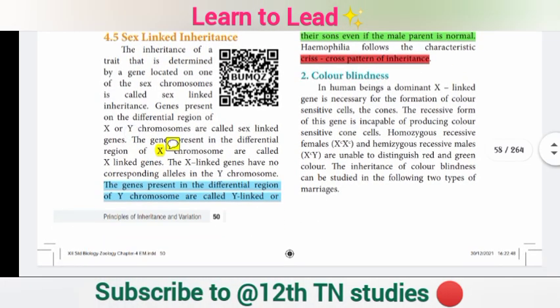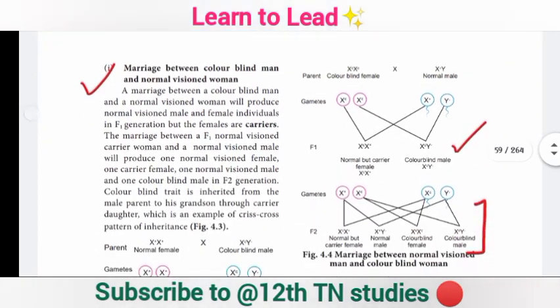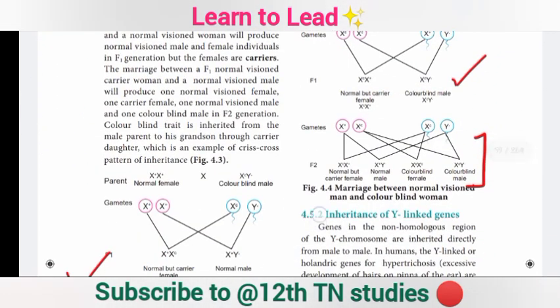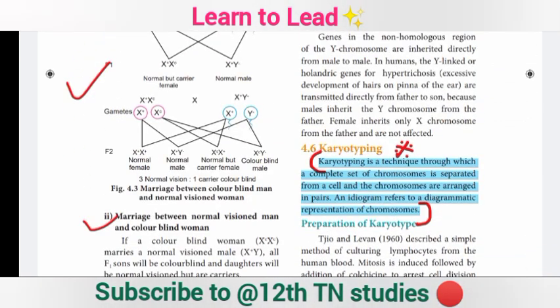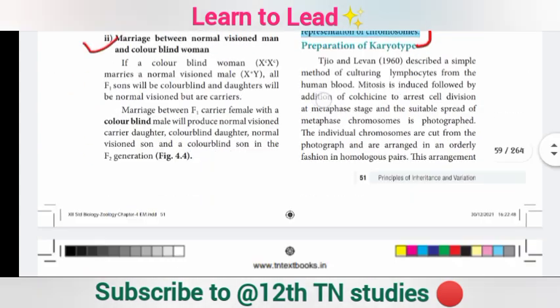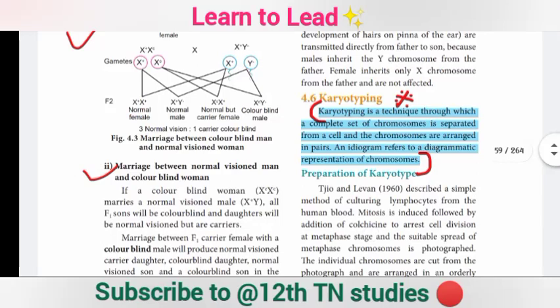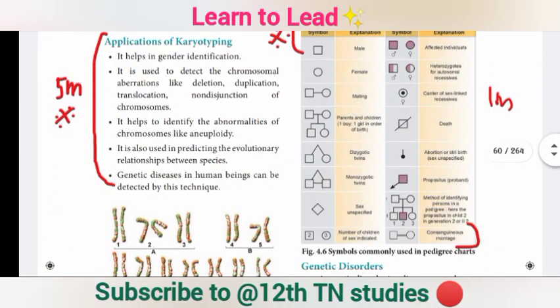Colorblindness involves sum calculations. In the next slide, there is an important 5-mark question involving application. If you start with the definition, you will get full marks. In the board exam, there is a direct application question on karyotyping worth 5 marks.